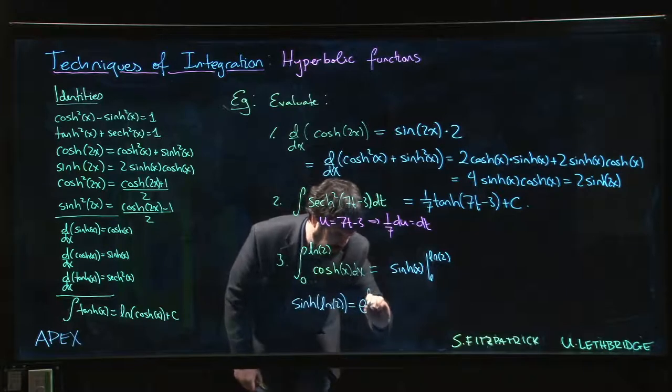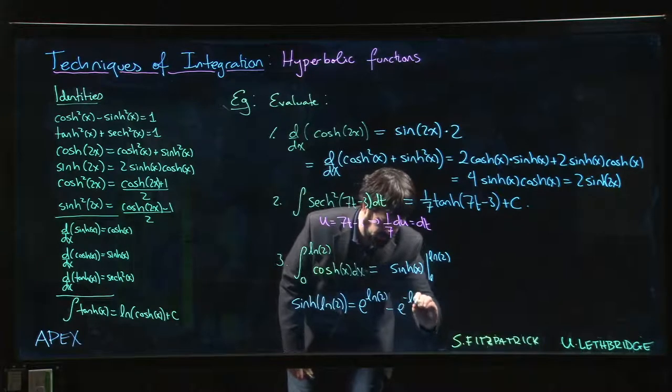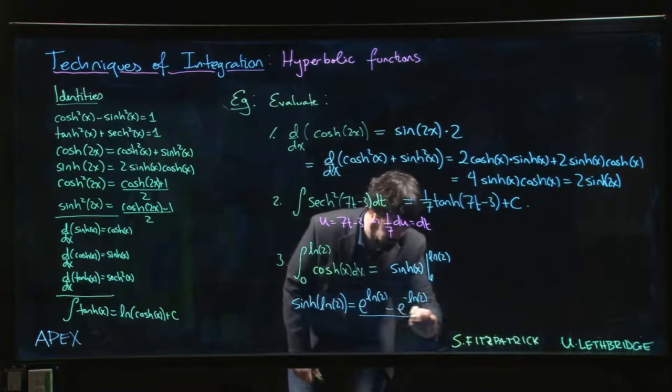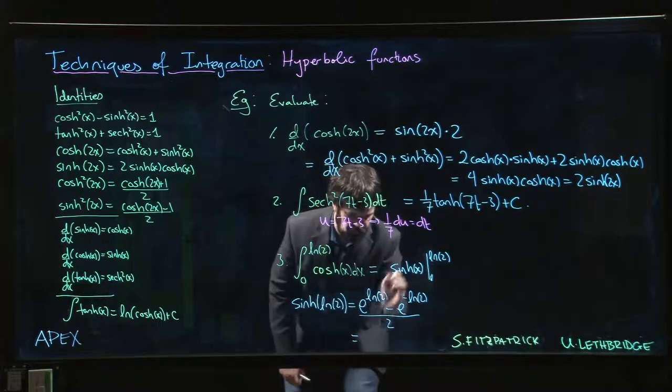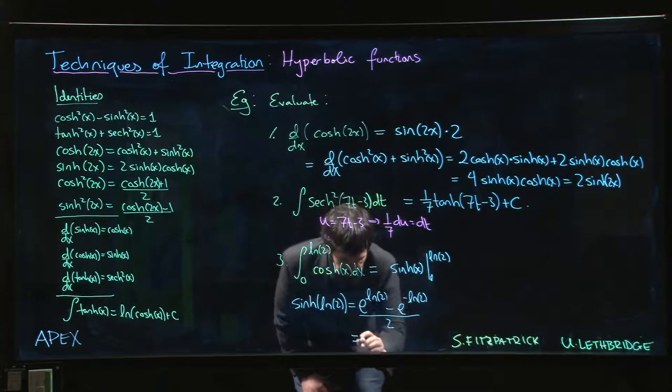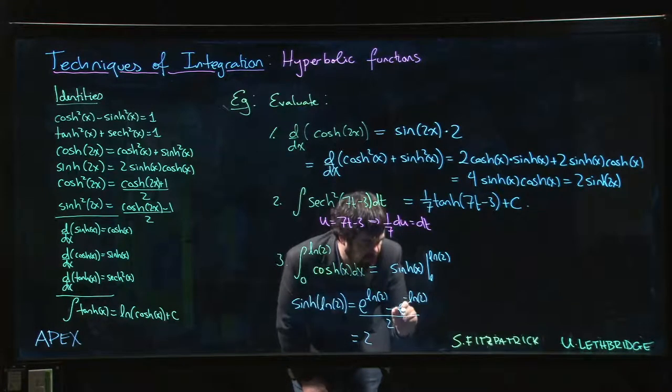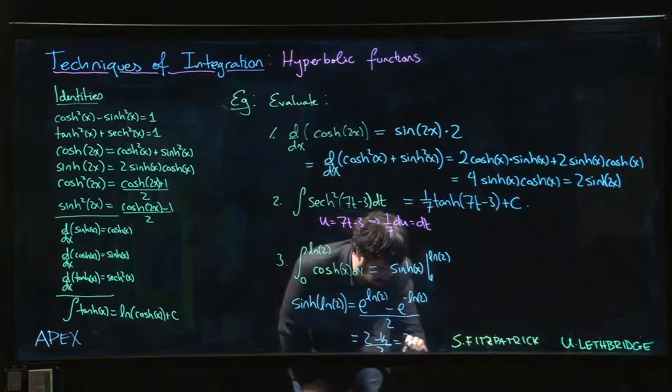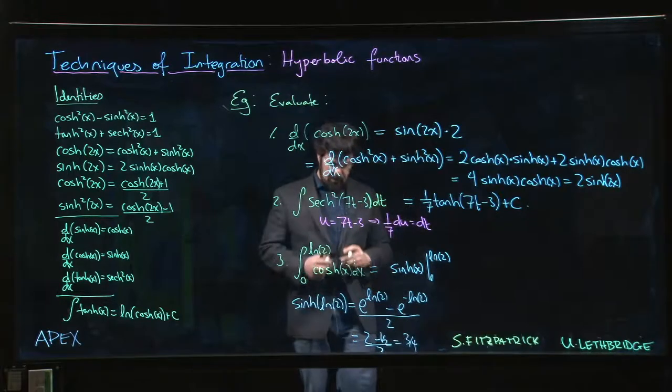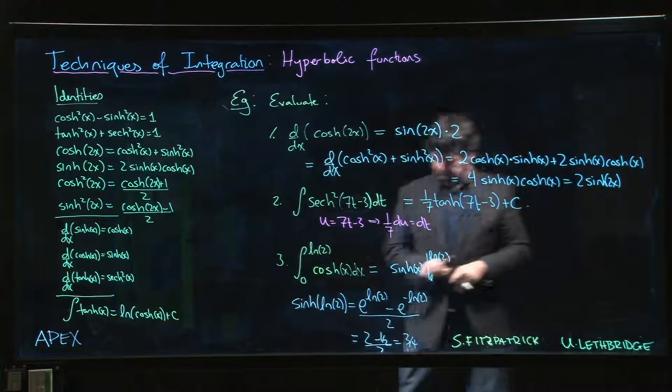That's e^(log 2) - e^(-log 2) over 2. And of course, these are inverses of each other, right? e^(log 2) is just 2. Bring that minus up if you like, so that's 2^(-1), so it's 1/2. Two minus 1/2, all divided by 2. We have 3/4 for that.